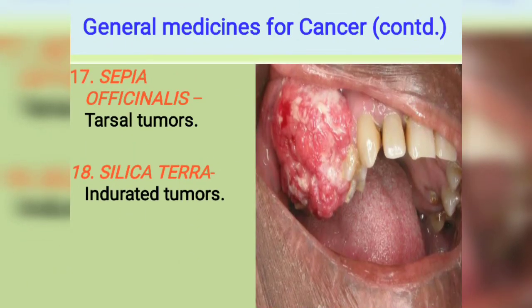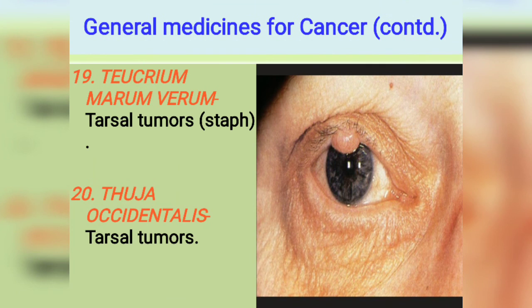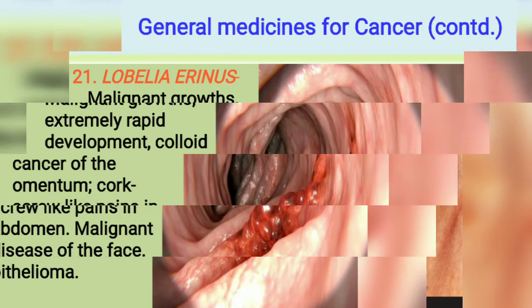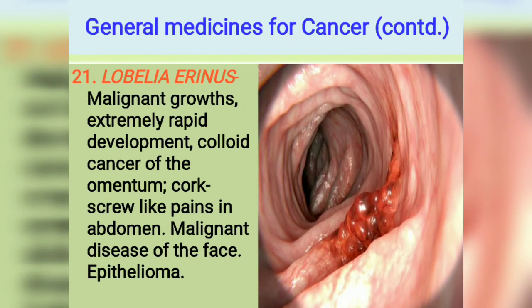Next is Chelidonium Officinale and Silicea Terra for indurated tumors. Next is Teucrium Marum Verum for tarsal tumors. Staphysagria is also comparable, and Thuja Occidentalis also has tarsal tumors. So these are the medicines for tarsal tumors.